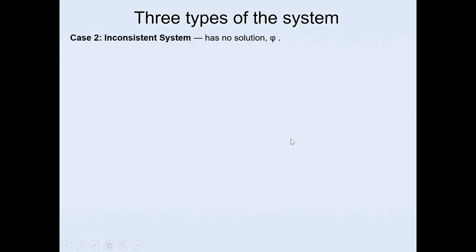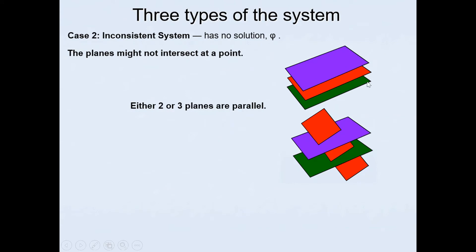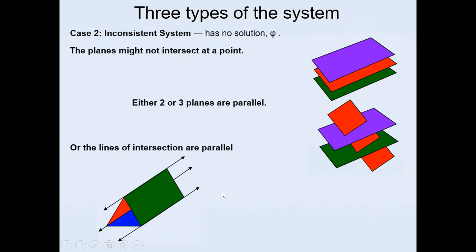The second case is an inconsistent system with no solutions. The planes might not intersect at a point, and either two or three planes are parallel. In one arrangement all three planes are parallel to each other, so there's no common point of intersection. In another, two planes are parallel and all lines of intersection are parallel — the arrangement looks like a triangular prism.